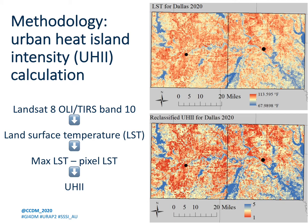We converted digital numbers from band 10, the thermal infrared band, into Fahrenheit, and then mosaiced images together as needed. Next, we calculated the UHII by subtracting the maximum land surface temperature at each pixel from the maximum land surface temperature of each urban area, as defined by boundaries from the U.S. Census Bureau. We then reclassified the UHII into five classes using Jenks natural breaks classification. As you can see from the images shown here, the land surface temperature and reclassified UHII maps are very similar.